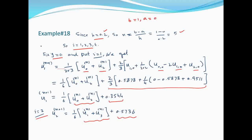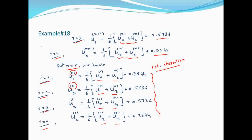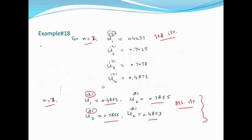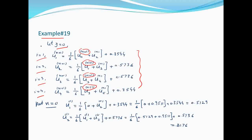Jacobi वाली equations में यहाँ N था। Gauss-Seidel में N+1 होगा। N=0 put करने पर left-hand side पर 1 आ जाएगा — first iteration शुरू हो गई है।